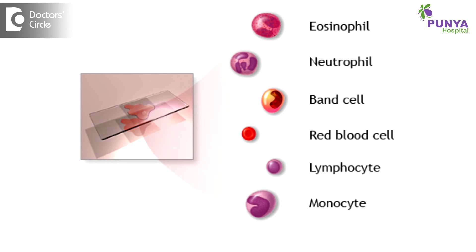Many times we try to subject the patient to additional investigations. Commonly done investigations include blood counts to understand that definite infective activity is happening, and in parallel we want to rule out coexisting disorders such as diabetes, or in case we are subjecting the patient for a surgical procedure under anesthesia, we may have to rule out any associated medical problems.